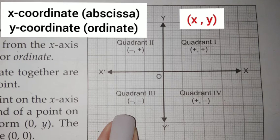Similarly, when the y-coordinate or ordinate is zero, the point lies on the x-axis.